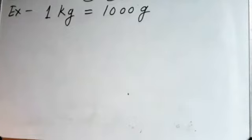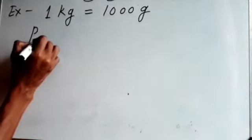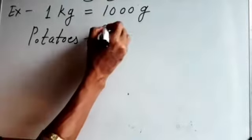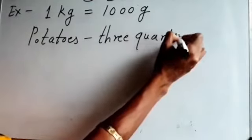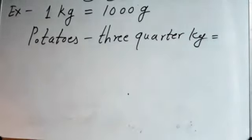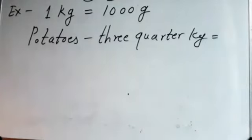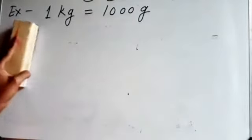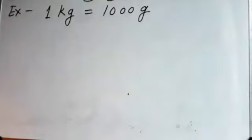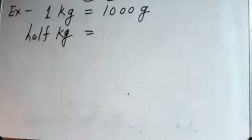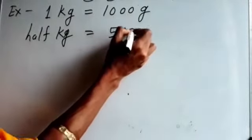Under this, we can convert half kilogram, quarter, or three-quarters also. Three-quarter kilogram — now, 1 kilogram means 1000 gram. Half kilogram means how much? Half of 1000 is 500 gram.